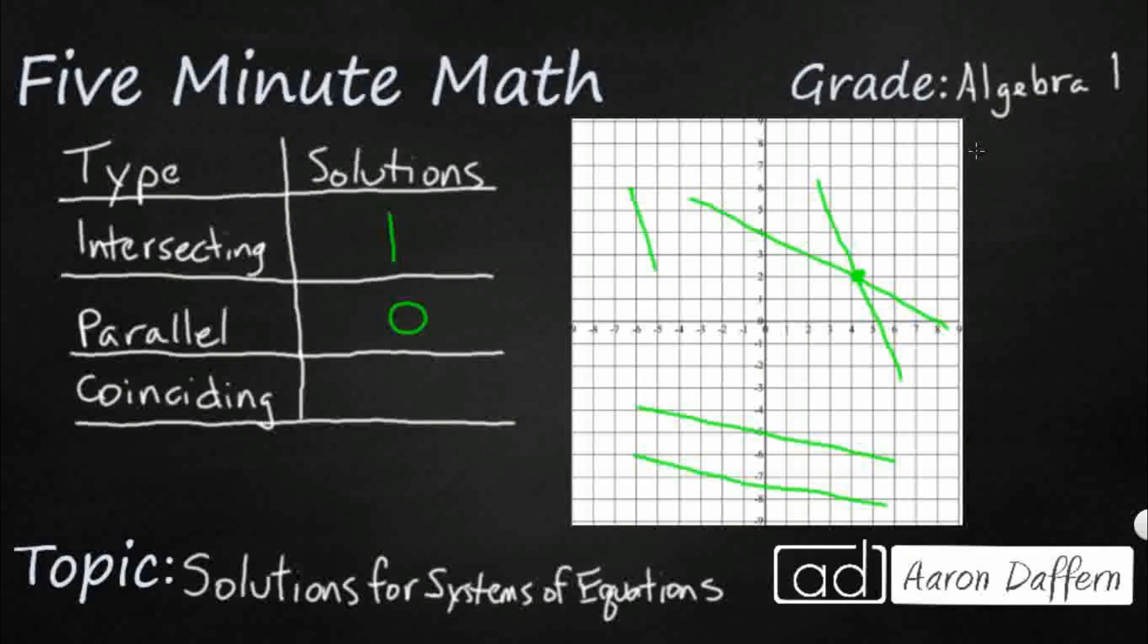Coinciding systems are actually very interesting. It means that they are exactly the same. So I actually drew a second line on top of that first line. They have an infinite number of solutions, because every single point is on both lines. Let's see what that looks like on some graphs.